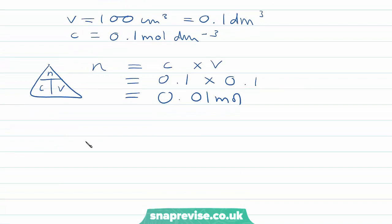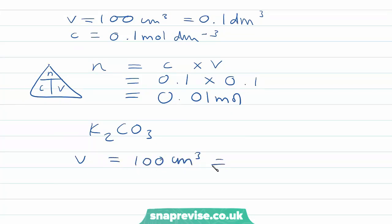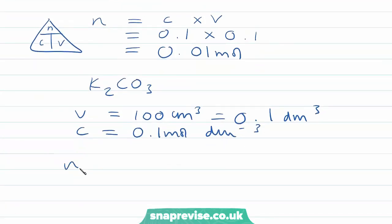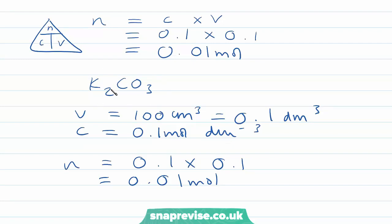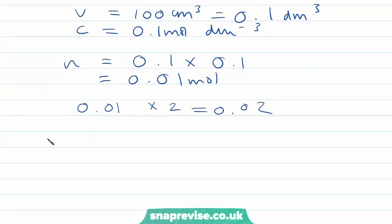Now for potassium carbonate, K₂CO₃: the volume is again 100 centimetres cubed (0.1 dm³), and the concentration is 0.1 moles per decimetre cubed, so the number of moles is 0.1 multiplied by 0.1, giving 0.01 moles. However, for every one carbonate ion we're producing two potassium ions, so we multiply by 2: 0.01 multiplied by 2 gives 0.02 moles. In total, 0.02 plus 0.01 gives us 0.03 moles of potassium ions.